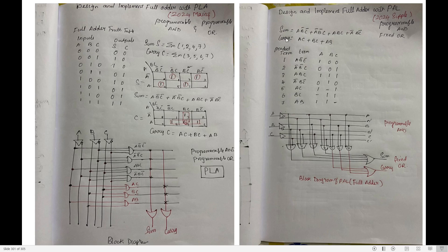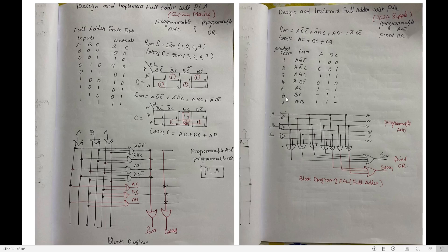OR is fixed. There are two outputs: sum and carry, so one OR gate for sum and one OR gate for carry. For sum: product terms 1, 2, 3, 4 — which are A·B̄·C̄, Ā·B̄·C, A·B·C, Ā·B·C̄ — go to the sum OR gate. For carry: A·C is the 5th term, B·C is the 6th term, and A·B is the 7th term — these three go to the carry OR gate. So 5, 6, 7 form the carry. This is programmable AND and fixed OR — the block diagram of a full adder using PAL.